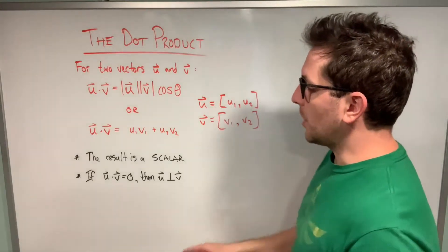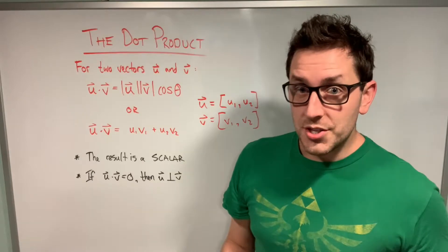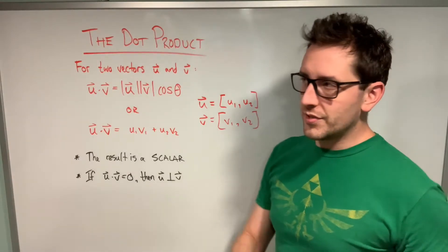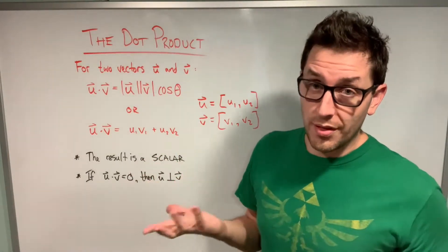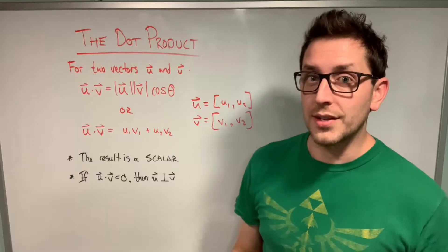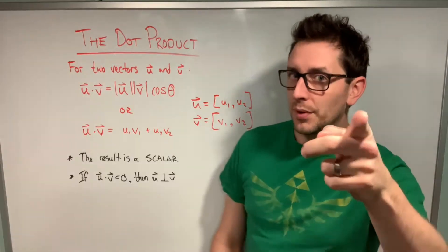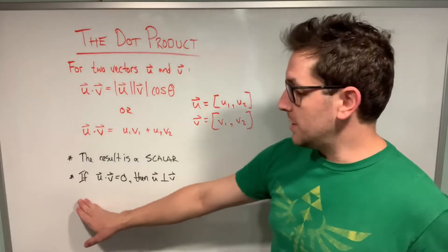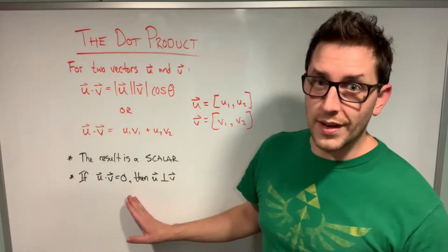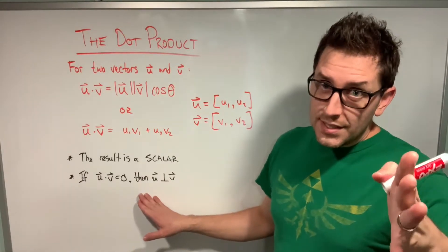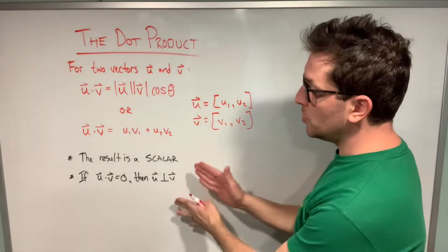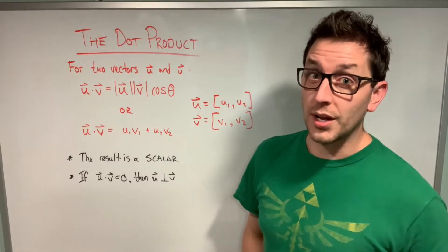Two really important points about the dot product: first, when we perform a dot product calculation the result is a scalar quantity, not a vector quantity — which is counterintuitive because you're taking two vectors. That is not the case with the dot product. When you look at the cross product of two vectors you will get a vector quantity, but that's a topic for another day. Second, if you take the dot product of two vectors and get zero, that tells us the angle between those two vectors is 90 degrees, and we call those two vectors orthogonal.